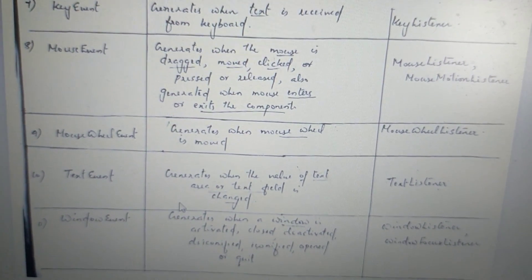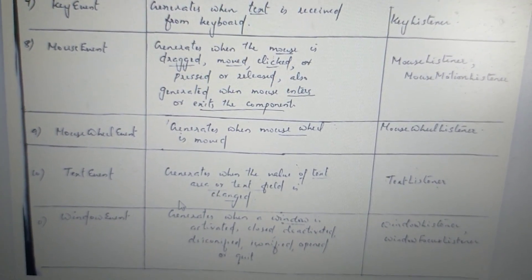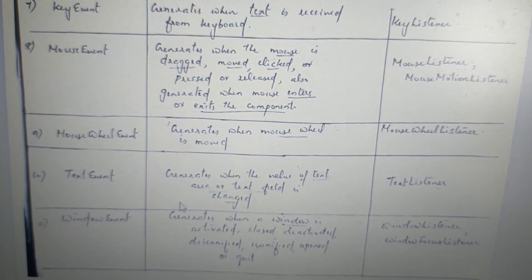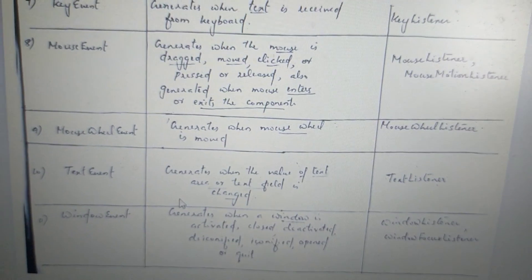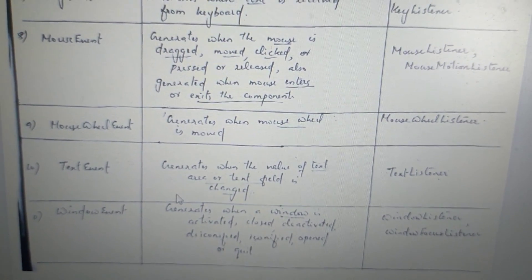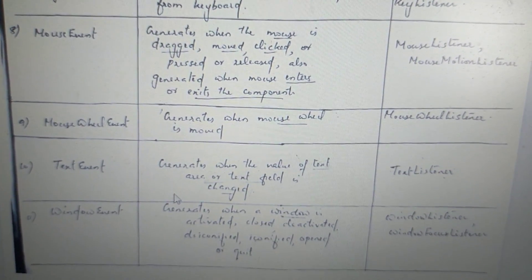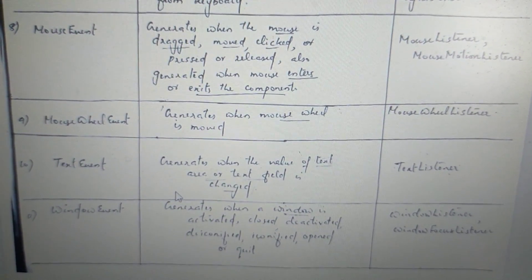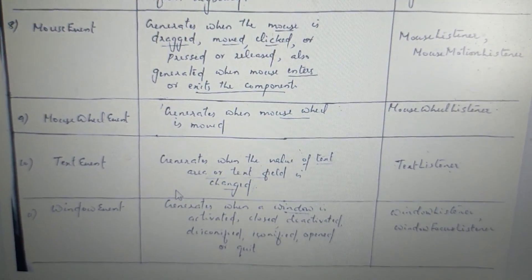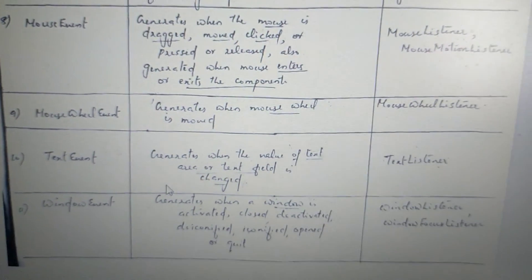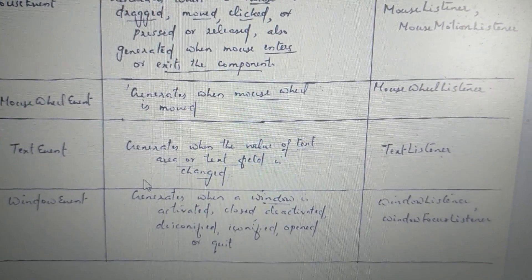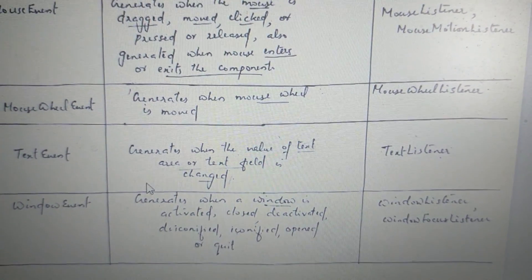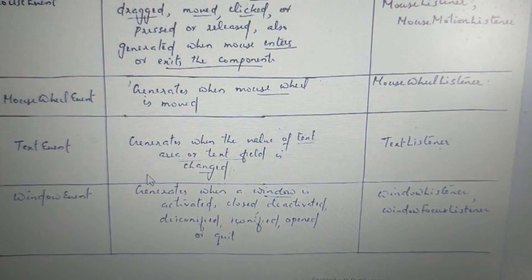Text event: corresponding text listener. Window event: activate, de-activate the window. The corresponding listeners are the window listener and window focus listener.